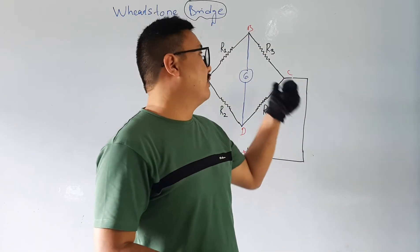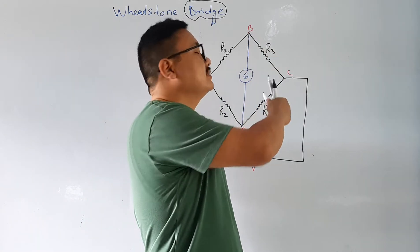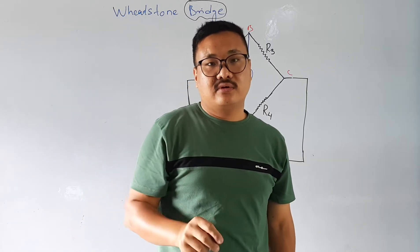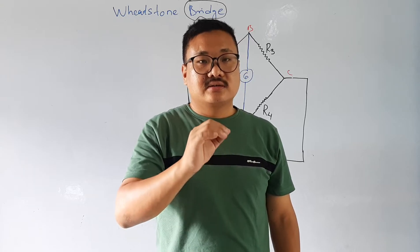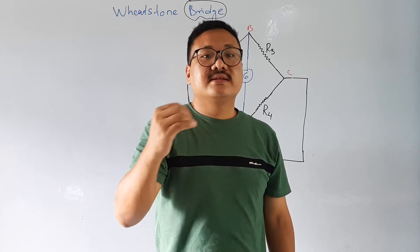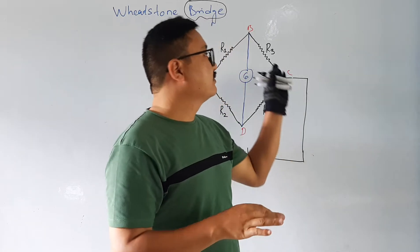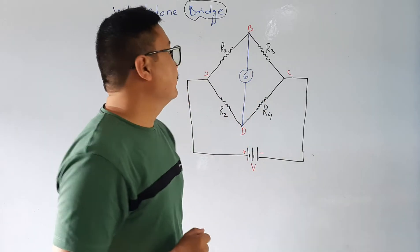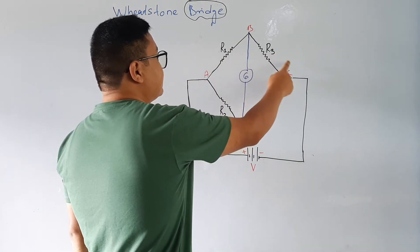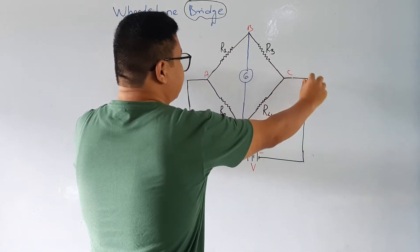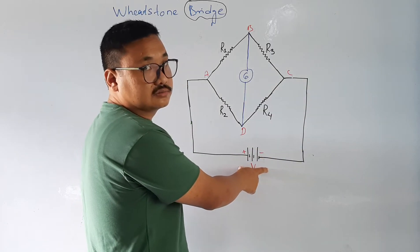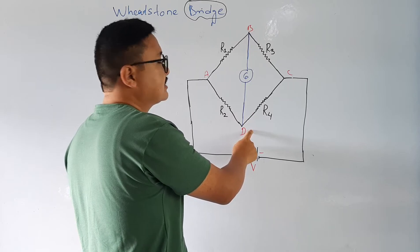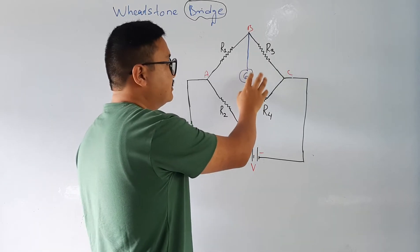All 4 resistances are connected in quadrilateral form. So the Wheatstone Bridge is a network of 4 resistances connected in series and parallel in the form of a quadrilateral, as shown in the figure, in which points A and C are connected with an external battery source V.